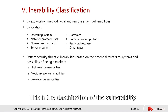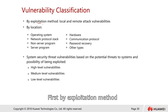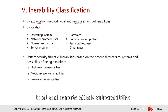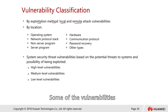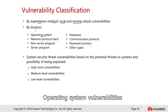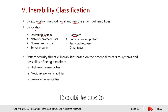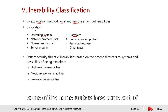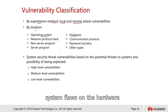These are the classifications of vulnerabilities. Some vulnerabilities can come from local attacks, and some from remote attacks — classified by location. We also have operating system vulnerabilities and hardware vulnerabilities, for example in firewall hardware or home routers that have system flaws.